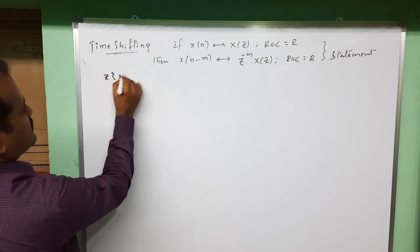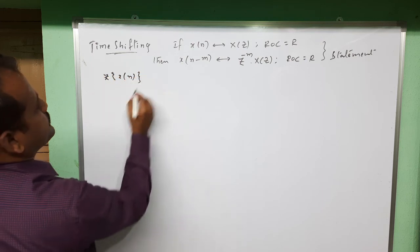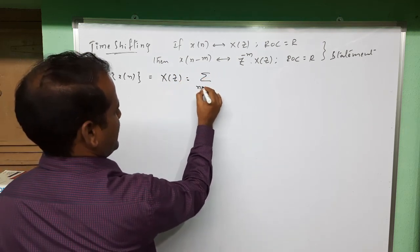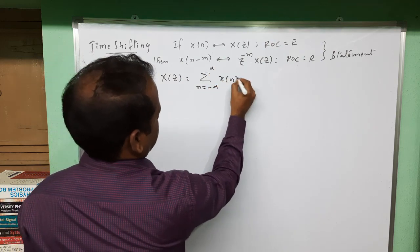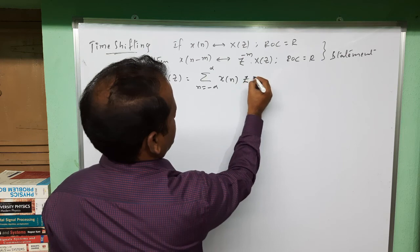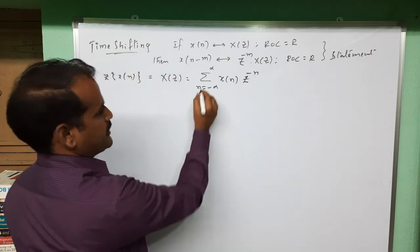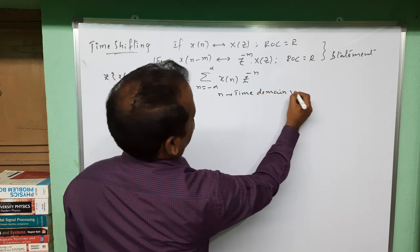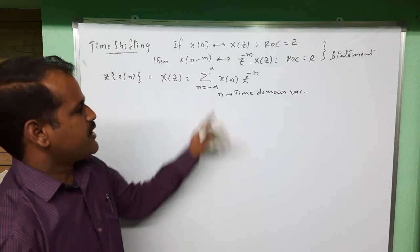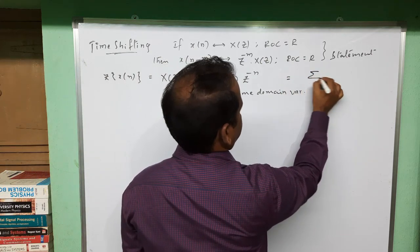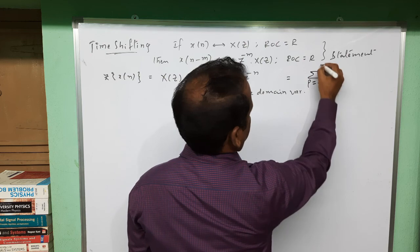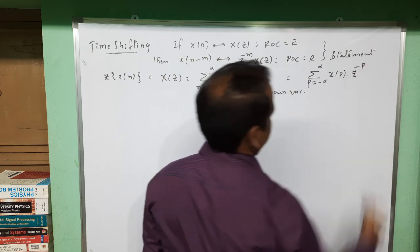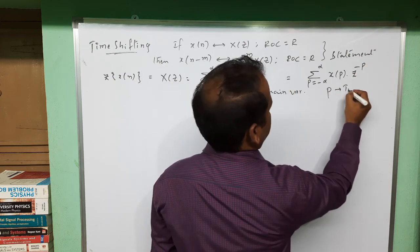The Z-transform of x(n) is equal to X(z). The standard formula has n running from minus infinity to plus infinity of x(n) multiplied by z^(-n), where n is the time domain variable. The same expression can also be written with p as the time domain variable: the sum from p equals minus infinity to plus infinity of x(p) z^(-p).